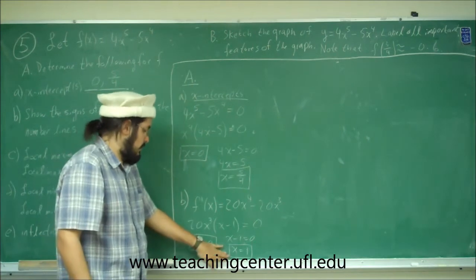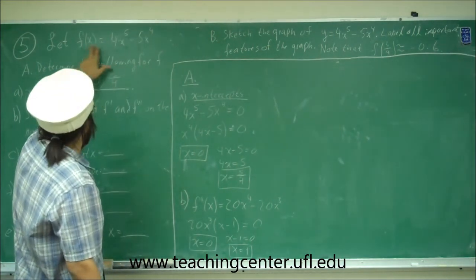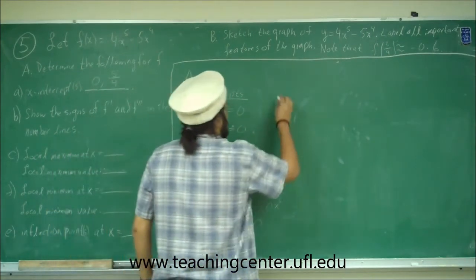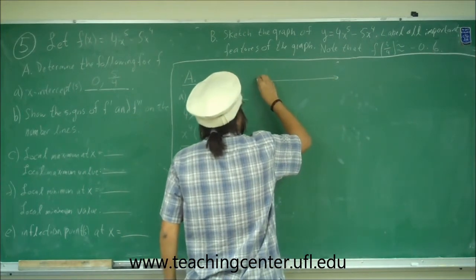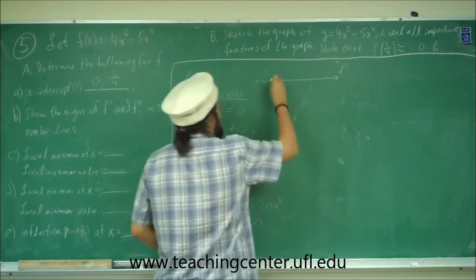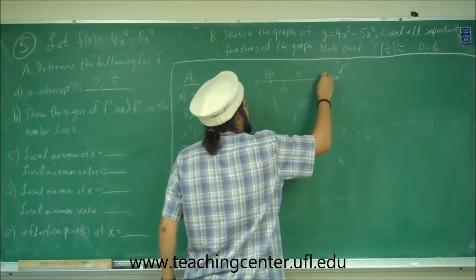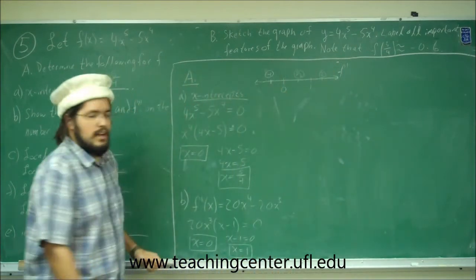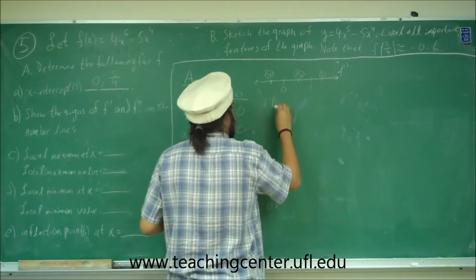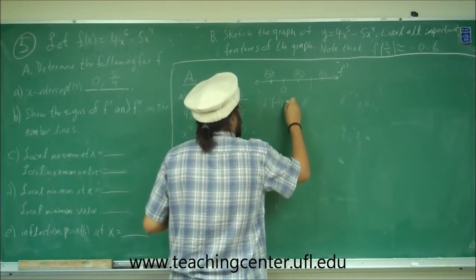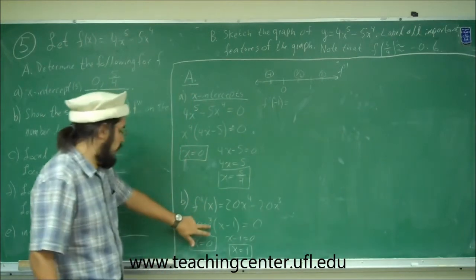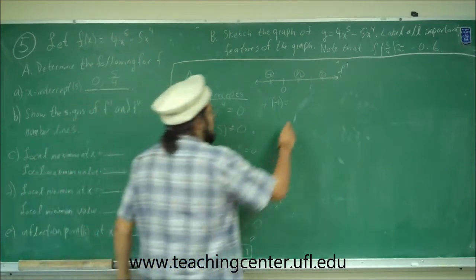To confirm they are actual critical numbers, we check that f(0) and f(1) are defined: f(0) equals 0, and f(1) equals 4 minus 5, which is negative 1 — both defined. So we have critical numbers at 0 and 1. We plot those on the number line and pick test points: negative 1, 1/2, and 2. For f prime of negative 1: (negative 1 minus 1) is negative 2, and negative 1 to an odd power is negative — negative times negative is positive. So it's positive, meaning increasing.